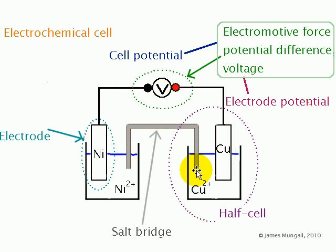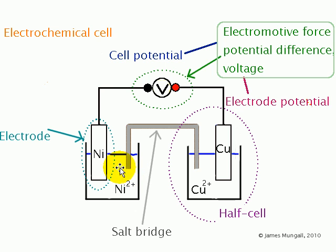A half cell is an electrode which is dipped into a solution of ions. Here the electrodes are copper on the right in a solution of copper ions, and then there's a nickel electrode in a solution of nickel ions, which makes up the left hand half cell.